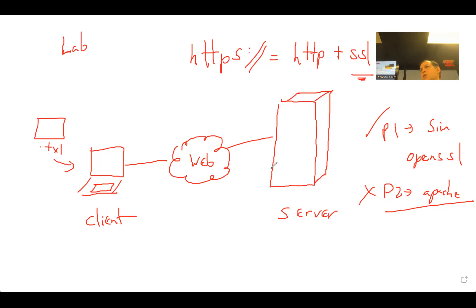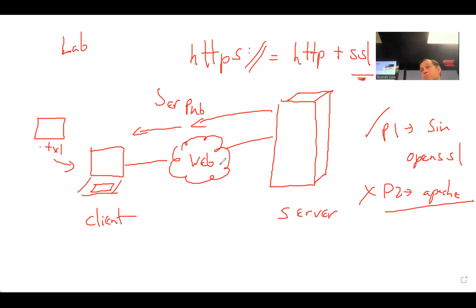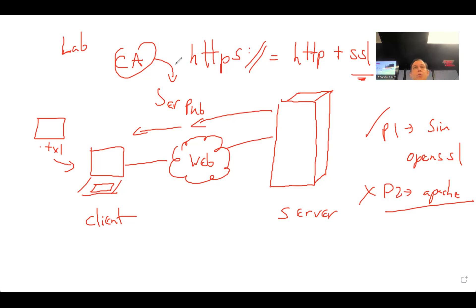First you have the key exchange, then you use encryption. The server is going to send its public key, but the client needs to know it can trust that key coming from the insecure internet. What we need is a Certificate Authority — CA. Since we're not going to pay VeriSign to sign our key, we're going to create a self-signed key and create our own certificate authority in Linux.